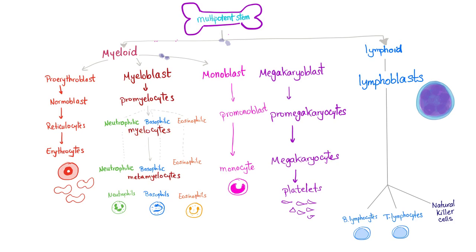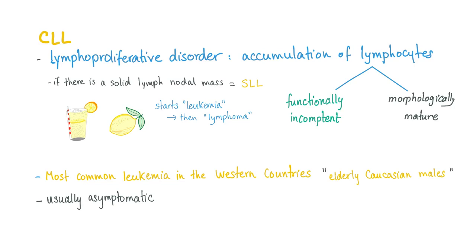In CLL, the problem is lymphoid, not myeloid — and the cells are mature lymphocytes, not immature blasts. It's a chronic leukemia. CLL is a lymphoproliferative disorder where there is accumulation of lymphocytes. These lymphocytes are morphologically mature — they appear as mature cells — however, functionally they are incompetent and useless. That's why it's cancer: lots of good-looking cells that are evil from the inside.